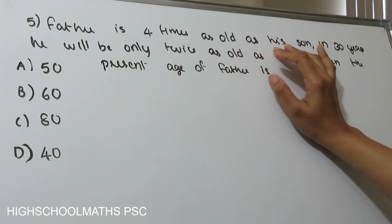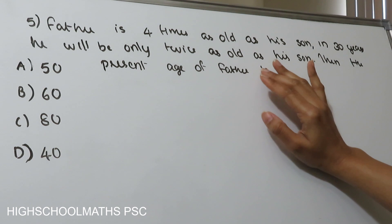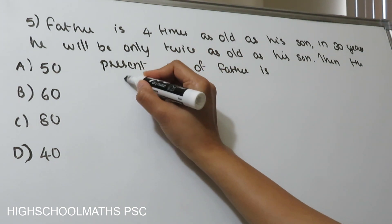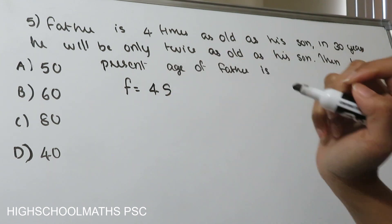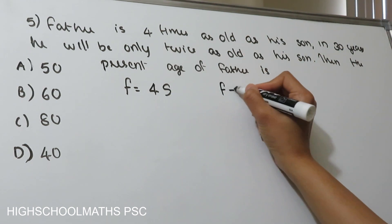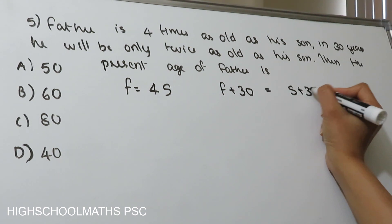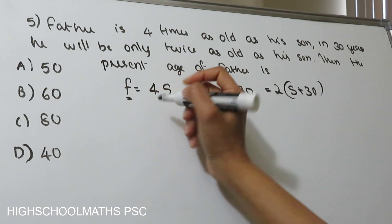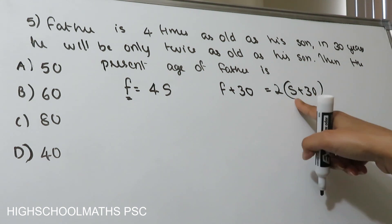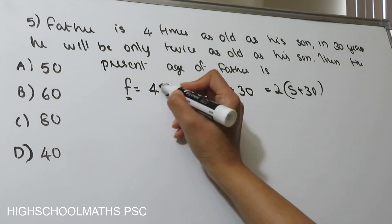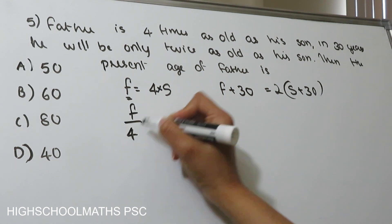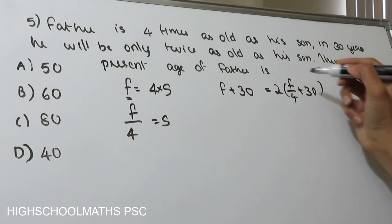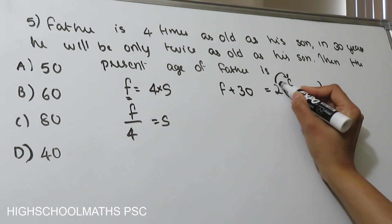Question 5: Father is 4 times as old as his son. In 30 years, he will be only twice as old as his son. Find the present age of the father. Let the son's age be s, so the father's age f = 4s. In 30 years: f + 30 = 2(s + 30). Substituting f = 4s into the equation and expanding: 4s + 30 = 2s + 60.